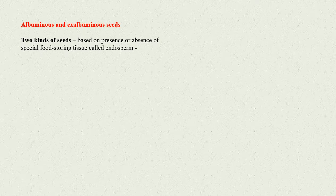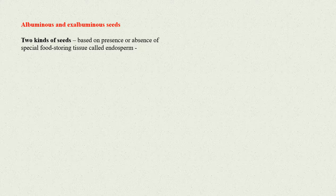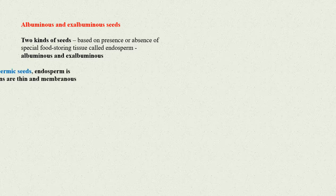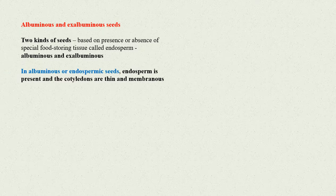Albuminous and exalbuminous seeds: On the basis of the presence or absence of special food storing tissue called endosperm, seeds are also classified as albuminous and exalbuminous. In albuminous or endospermic seeds, endosperm is present and the cotyledons are thin and membranous.